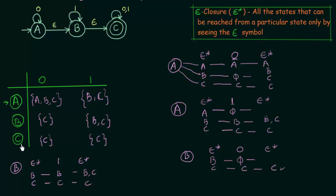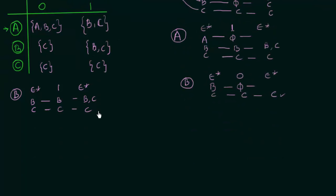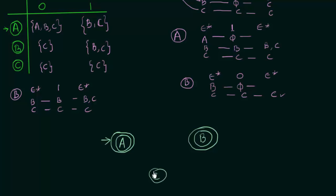Let us draw the transition diagram for this NFA. State A is both the initial state and a final state, so it gets a double circle with an arrow. State B is also a final state — double circle. State C is also a final state — double circle. A on input 0 goes to A itself, and also to B, and also to C. On input 1, A goes to B and also to C.